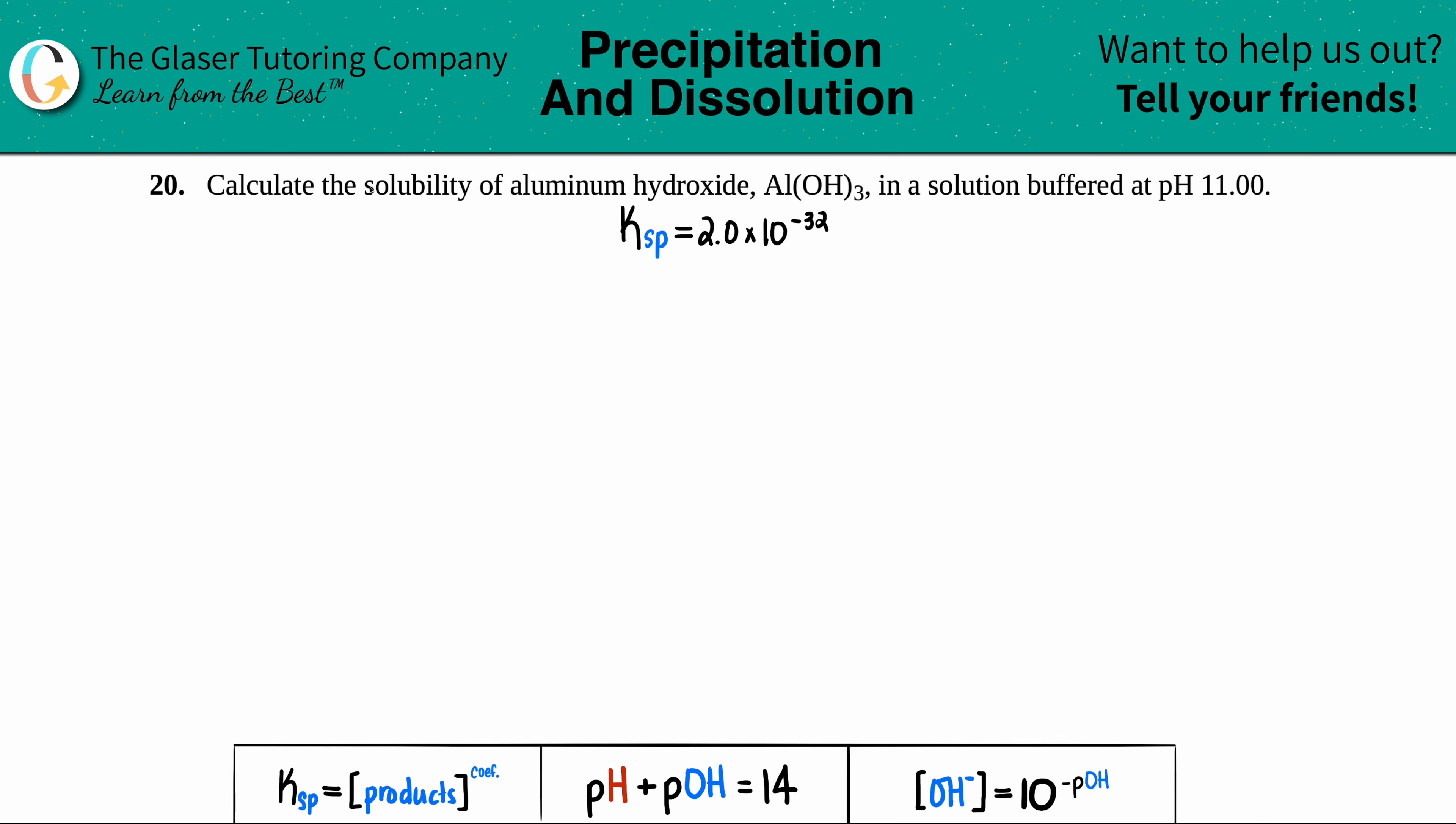Number 20. Calculate the solubility of aluminum hydroxide, Al(OH)3, in a solution that's buffered at a pH of 11. When they're asking for calculating the solubility, they're really asking to calculate the molar solubility.